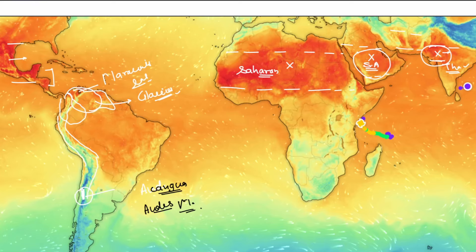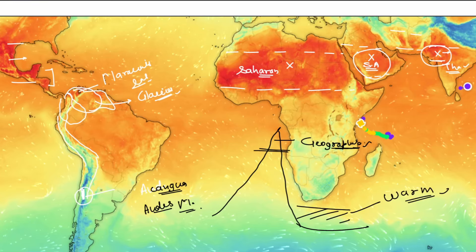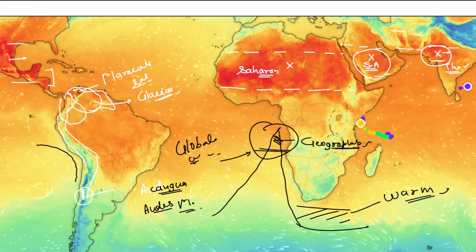We are not seeing glaciers here because of latitude — we are seeing the glaciers because of the high elevation. So it is a geographical feature, not a climate feature. On the lower lands the temperature is still very warm. And what we want to show is that even at this altitude the glaciers have been melting because of global warming. We will also be talking about the El Niño effect.